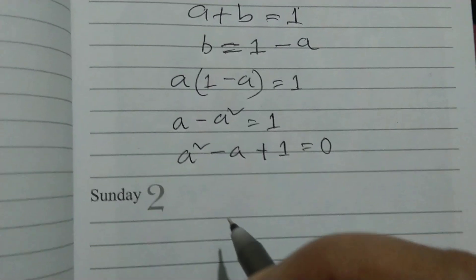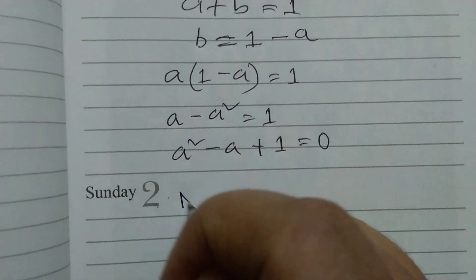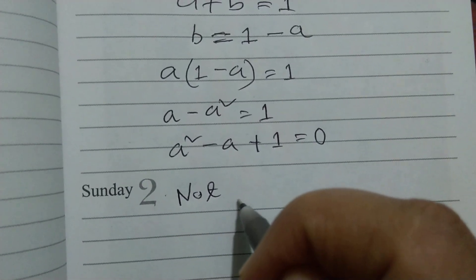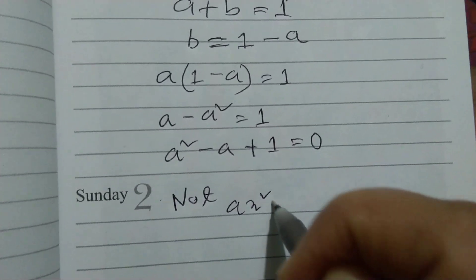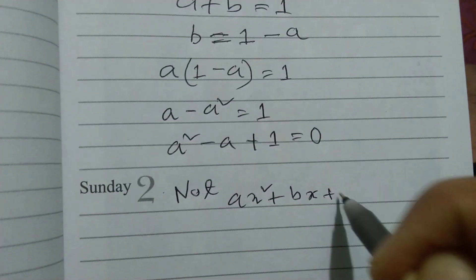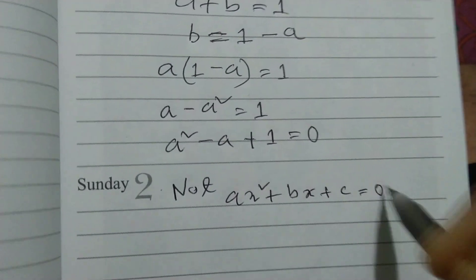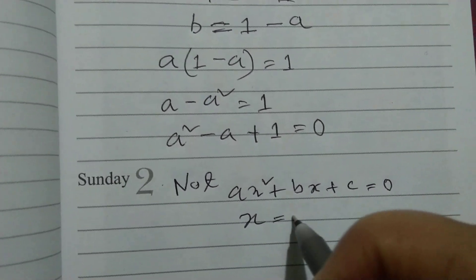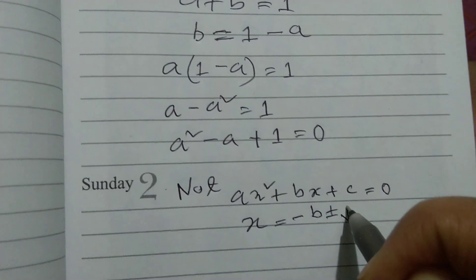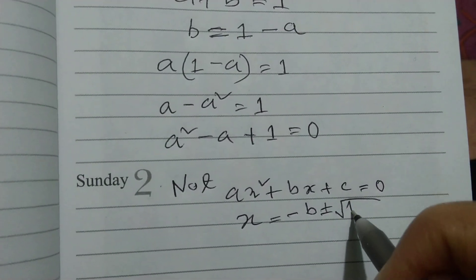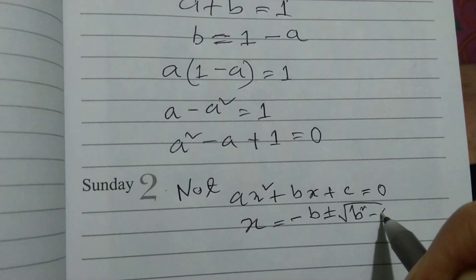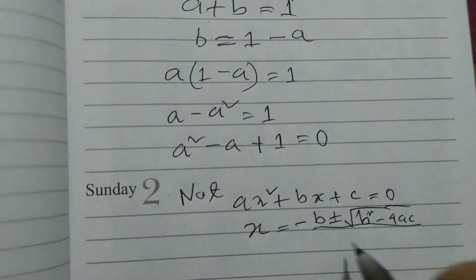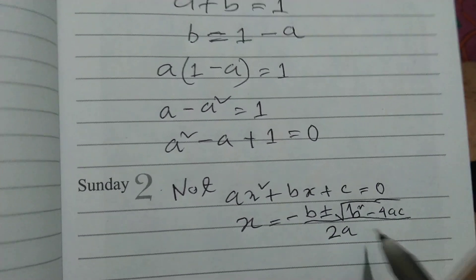Now we use the basic formula — an important note: for ax² + bx + c = 0, then x = (-b ± √(b² - 4ac)) / 2a.